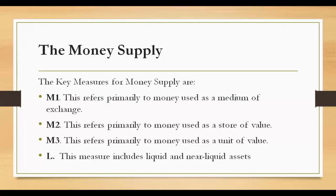Recapping our earlier discussion on the concept and functions of money: money serves three purposes — medium of exchange, store of value, and unit of value or unit of account. These three functions align directly with the key measures for money supply: M1, M2, and M3 respectively.